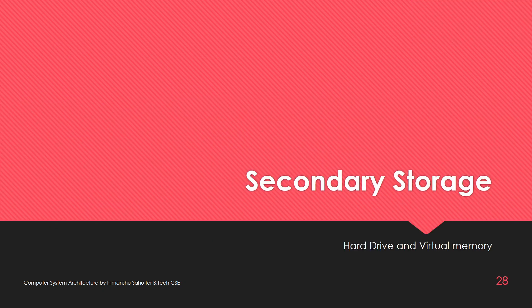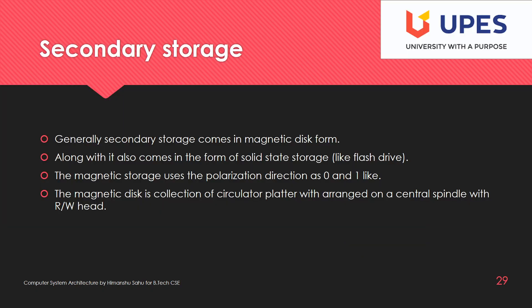Secondary storage is your hard drive. Generally secondary storage comes in the magnetic disk form. Magnetic storage uses polarity to differentiate between zero and one — north polarization of the magnetic material is treated as one and south polarization as zero. This kind of convention represents one and zero.